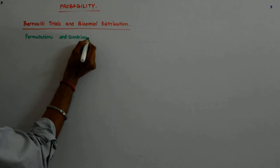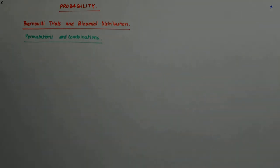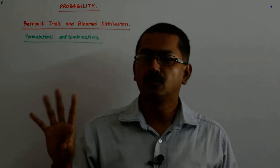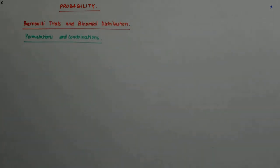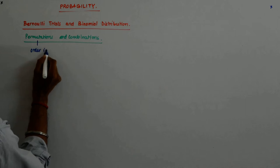The difference is very simple. Permutation involves this: if you change the order, it is counted as a new event. So order is important. What is permutation? Here, order is important.